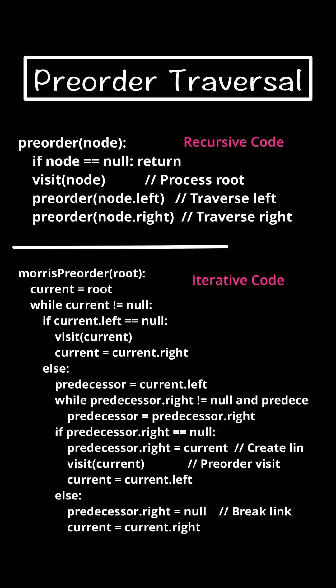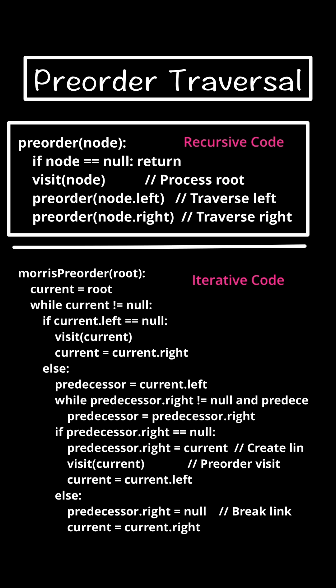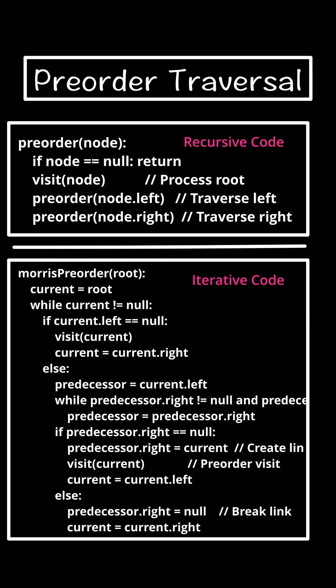This is code for pre-order traversal of a binary tree. The recursive approach looks simple, while the iterative approach is very lengthy and hard to understand. Due to this, developers prefer recursive code over iterative when choosing between iteration and recursion.